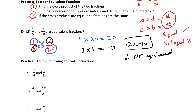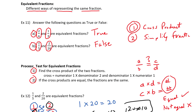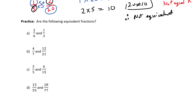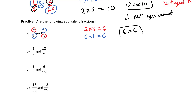Now let's try practice question A, which is 2 over 6 and 1 over 3 — we said this was true. We take these two values: 2 times 3 is 6. And we take these two values: 6 times 1 is 6. Since 6 equals 6, yes, they are equal — these two fractions represent exactly the same value.